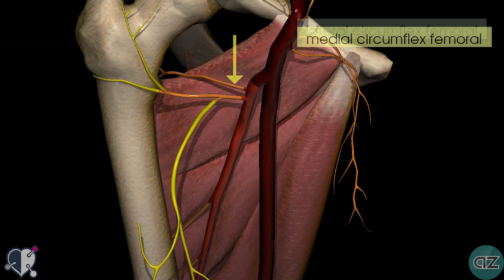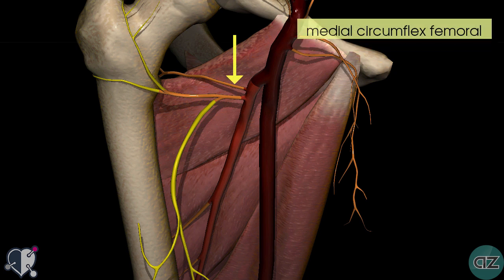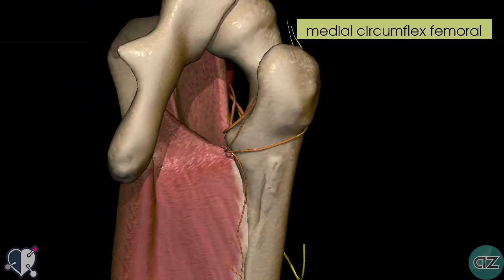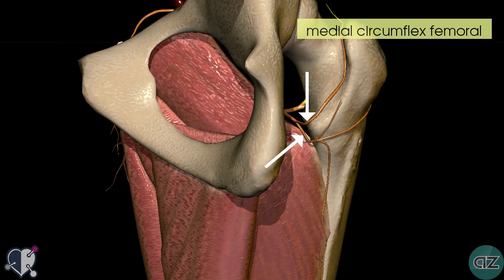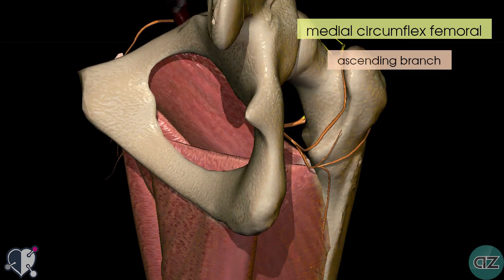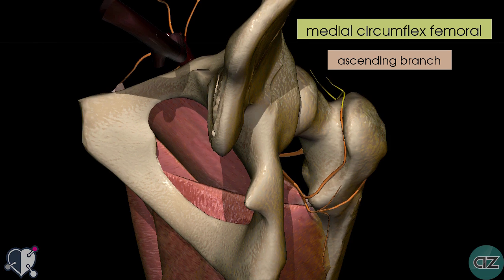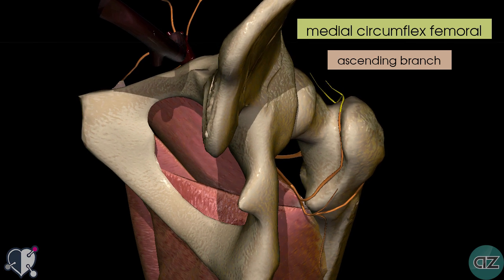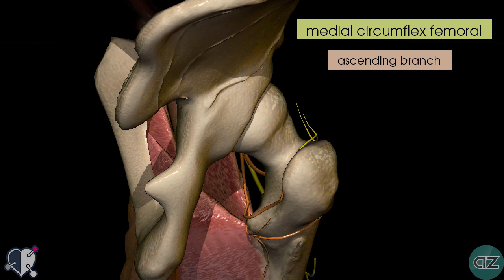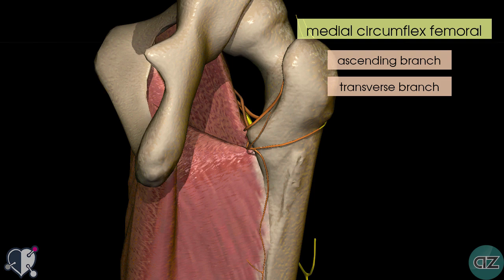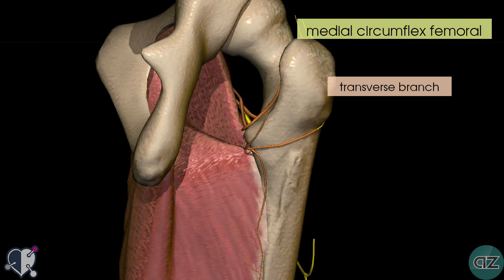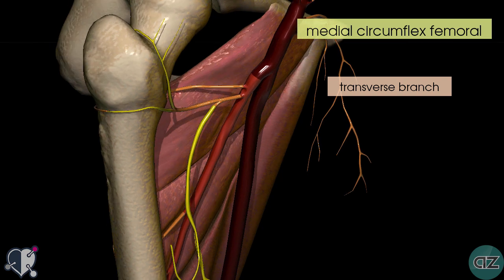The medial circumflex artery comes off a bit more posteriorly from the profunda femoris artery. If I just rotate the model around, you can see how it has two branches. It's got one ascending branch which anastomoses with the ascending branch of the lateral circumflex artery, and there's also a transverse branch which anastomoses with the transverse branch of the lateral circumflex artery.